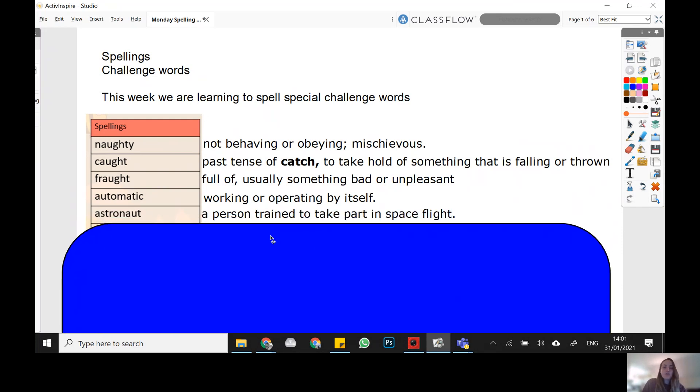The next word is astronaut. So an astronaut is a person who is trained to go to space. Some people want to be astronauts when they grow up, people who go up into the space station or basically out of the world atmosphere.